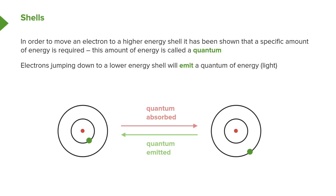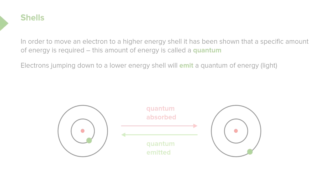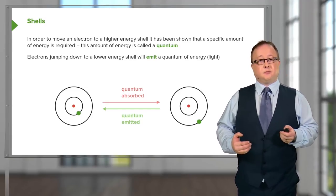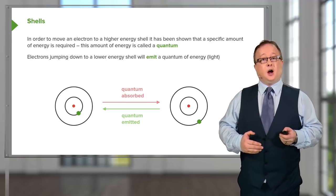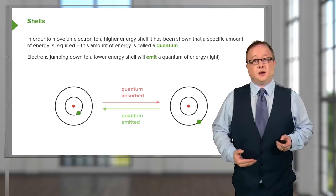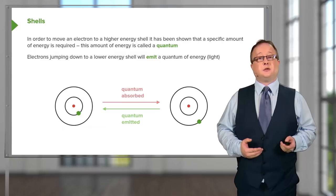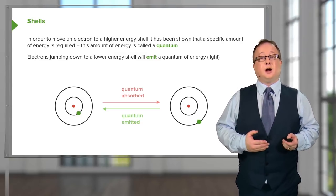In order to move an electron to a higher energy shell — analogous to a person moving from one step to another — a specific amount of energy is required, called the quantum energy. This is the small amount of energy required to move a particle from a specific distance from a proton to the next distance away, i.e., to move it from shell one to shell two. As we'll see when talking about molecular orbitals, these movements of electrons from higher shells to lower shells are the origins of things like fluorescence and phosphorescence.